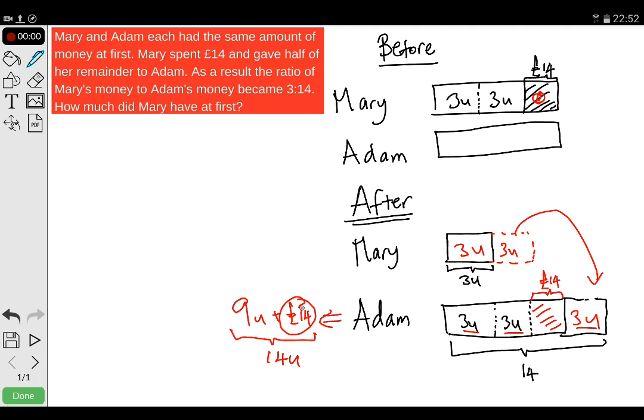Therefore, the 14 pounds must be worth 5 units. This must be 5 units. So 5 units is equal to 14 pounds, and 1 unit must be 14 pounds divided by 5. Therefore, 1 unit is 2 pounds and 80p.